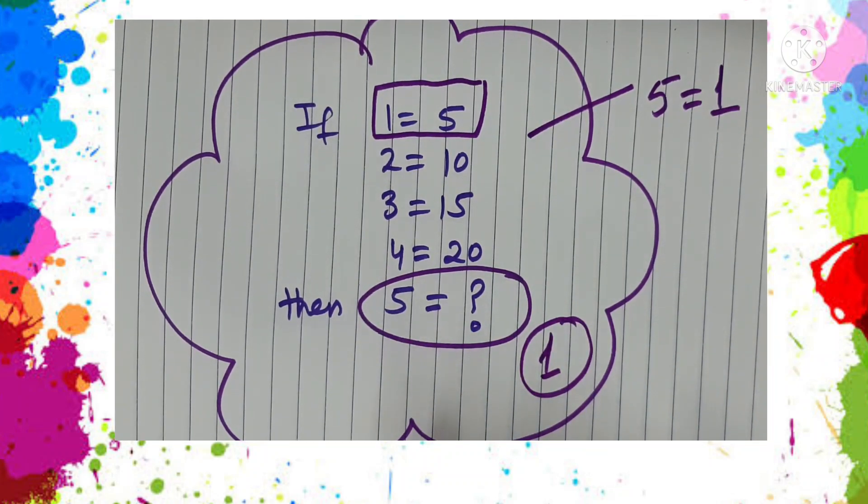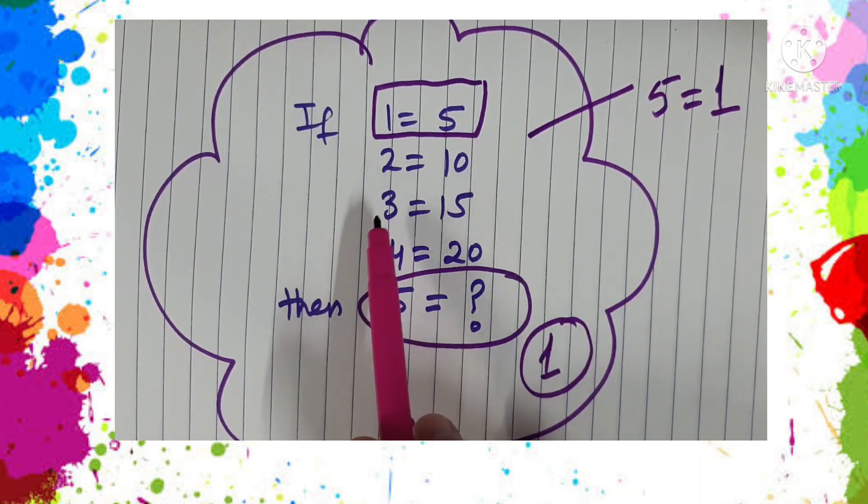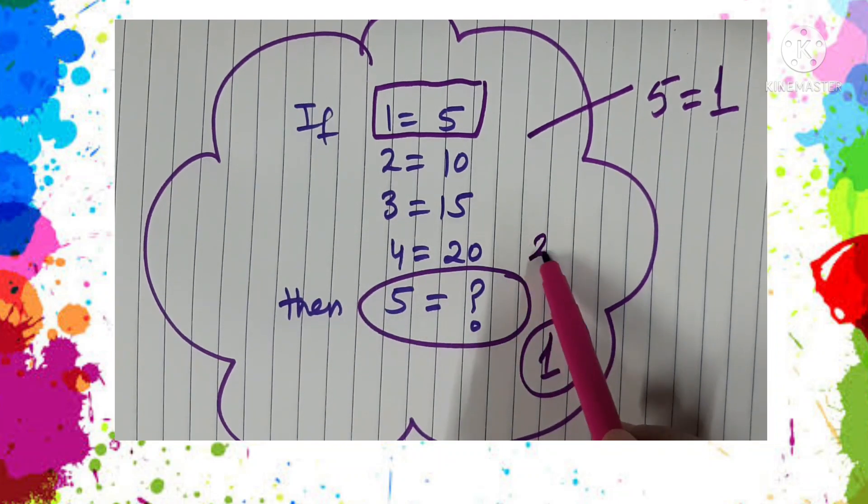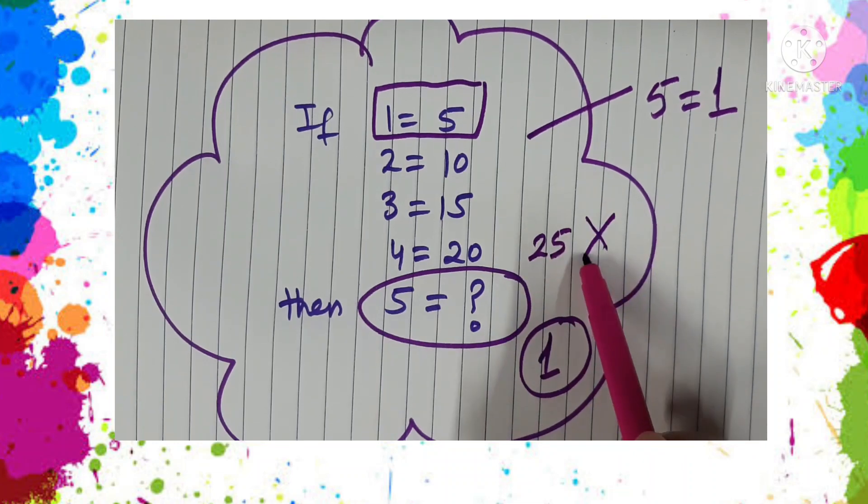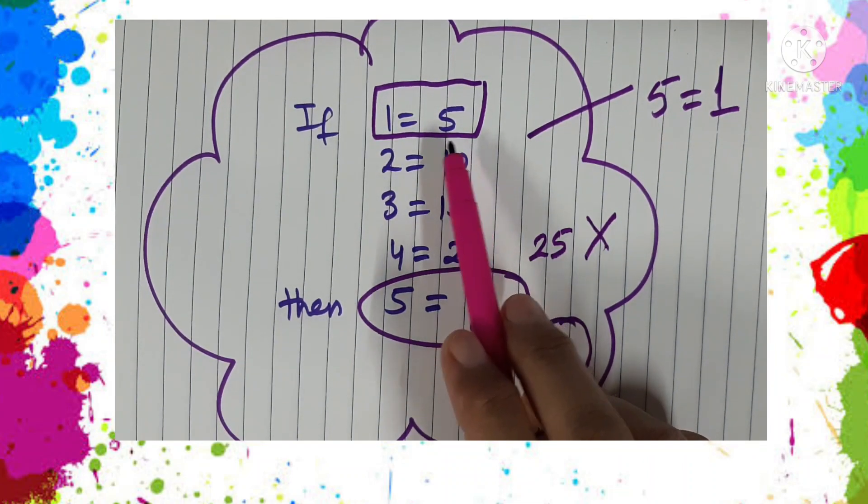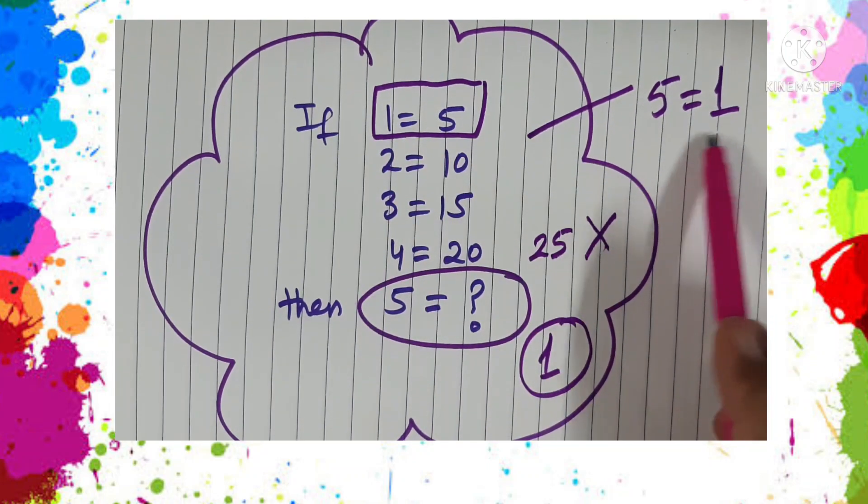Many people think that if 1 is 5, 2 is 10, 3 is 15, 4 is equal to 20, then 5 will be equal to 25. But this is not right because we observe here that 1 is equal to 5, which means 5 is equal to 1.